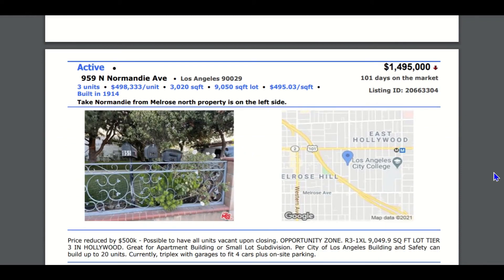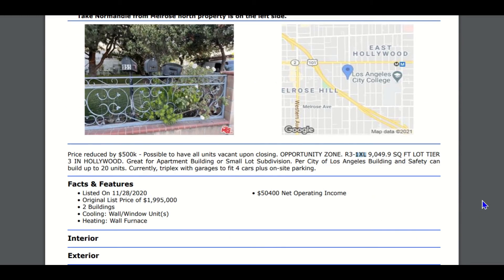On to the next opportunity — this one is in Hollywood. The lot size on this parcel is 9,050 square feet. Based on my calculations, you can build about 11 units by right. If you want to take advantage of the TOC, you can get as many as 18 or even 20 units. There is a height limitation on the property, but with the TOC we're able to bump up the height limit to get more out of the development.